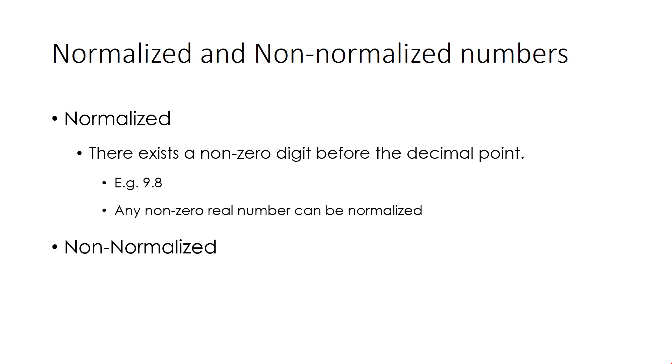Non-normalized numbers: The number in which there exists a zero digit before the decimal point is called a non-normalized number. For example, 0.98 in which we have number 0 before the decimal point. This number can be normalized as 9.8 × 10⁻¹.